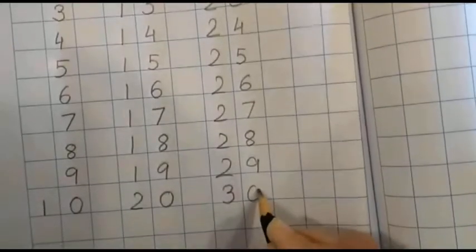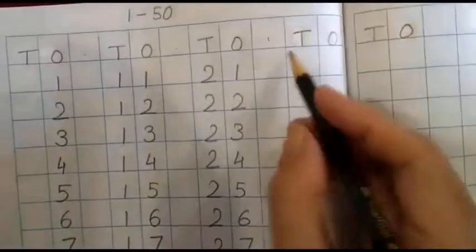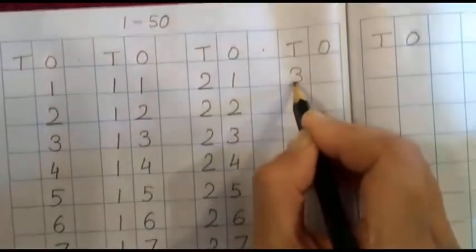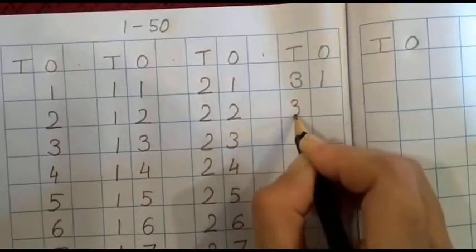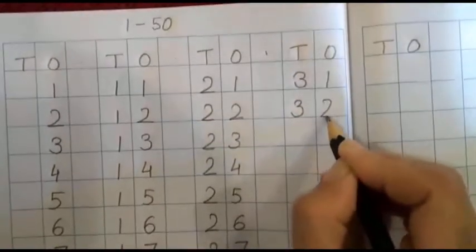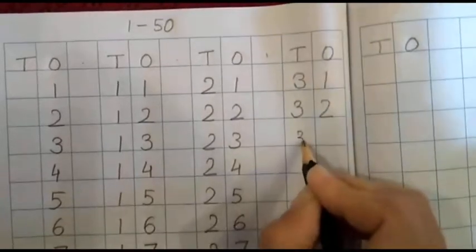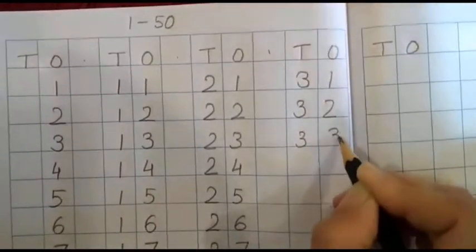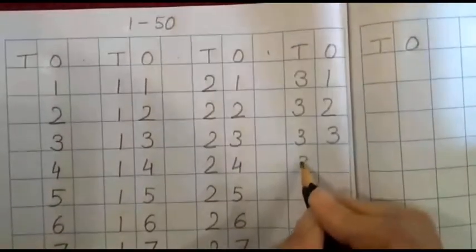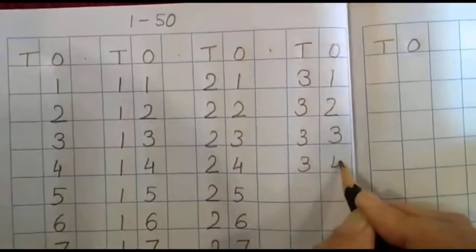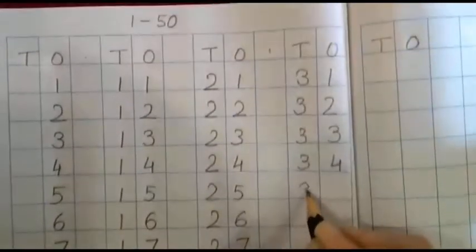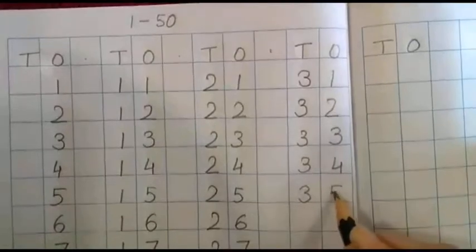Three zero thirty. Now again we will go to T and O box. Three one thirty one, three two thirty two, three three thirty three, three four thirty four, three five thirty five.